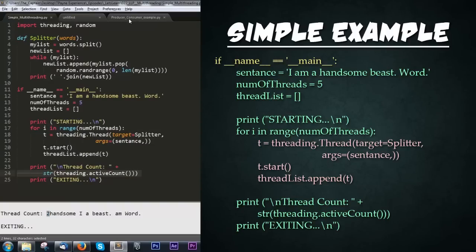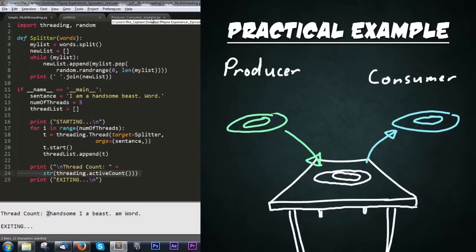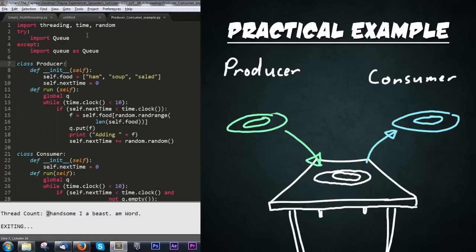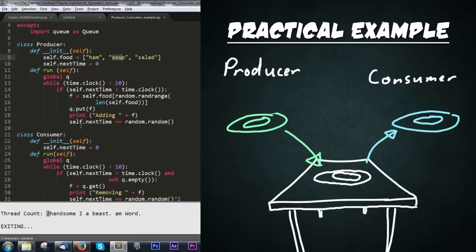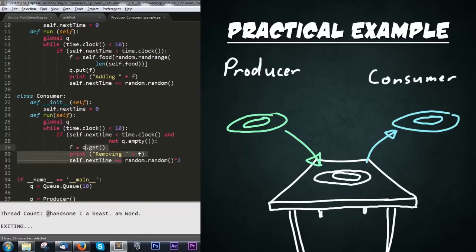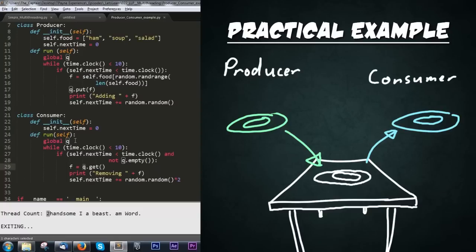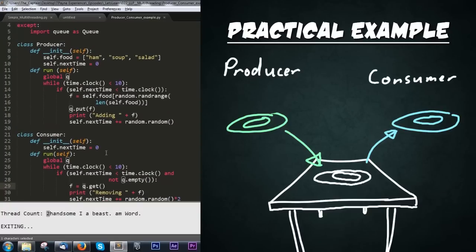This other file is called producer_consumer_example.py. This is actually a prime example to use multithreading: you'll have a producer and a consumer. The producer will, for instance, put plates of food on a table, and then the consumer will come over and pick up plates off the table. This program has a producer class that creates little strings like ham, soup, and salad, and then a consumer that pulls them from a queue. The queue could also be a list — I wanted to use a queue because you'll typically be using queues with multithreading.